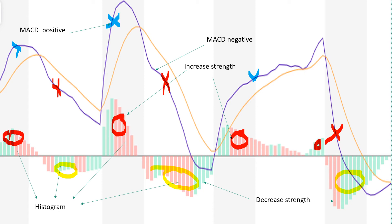MACD indicator, on one hand, measures the position of the fast and slow exponential moving averages relative to each other, and on the other hand, measures the distance between the two moving averages and how that distance changes, then issues a reversal signal. That is why it performs the job of both a leading and a lagging indicator.